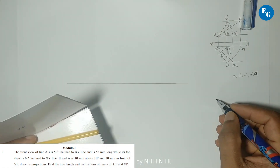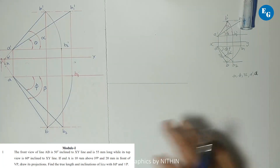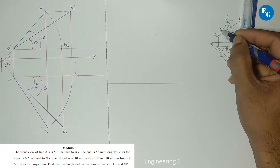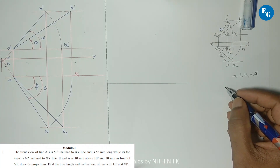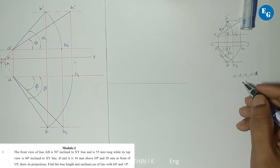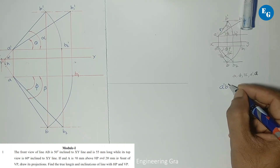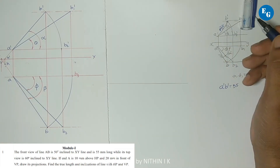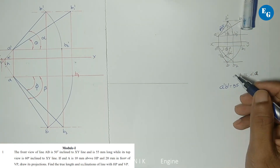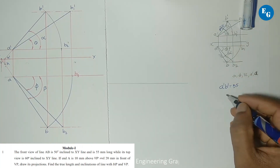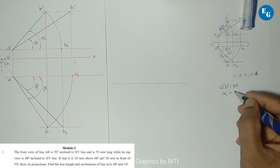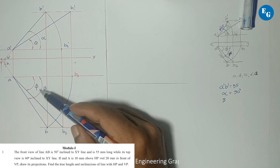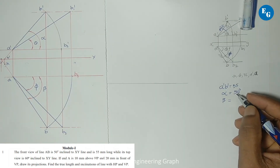The front view of line AB is 50 degrees inclined to XY line — that is A dash B dash. This is the front view. A dash B dash is 50 degrees inclined to XY line and is 55 mm long. A dash B dash length is 55 mm. Alpha equals 50 degrees. The top view AB makes an inclination beta equal to 60 degrees.